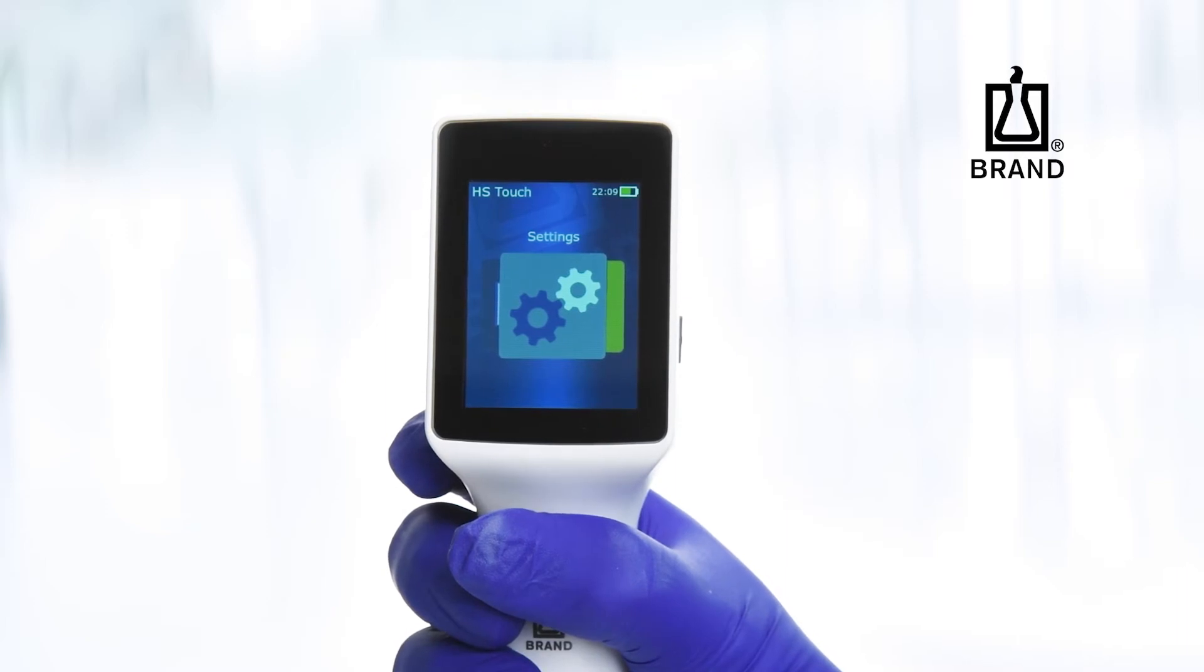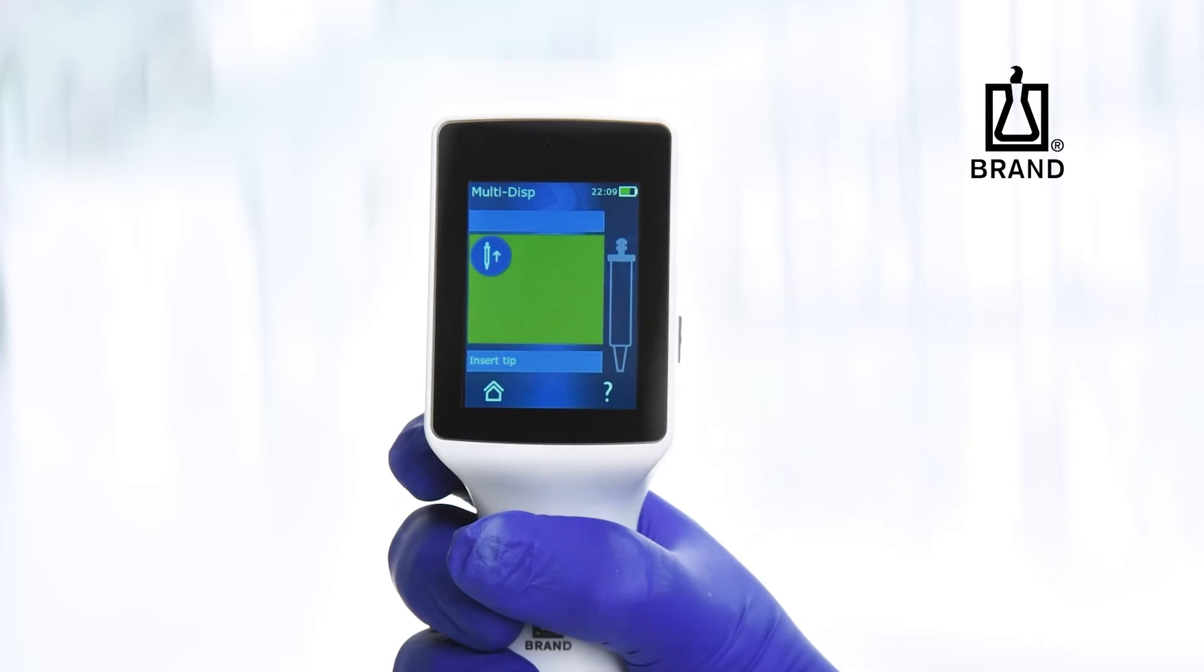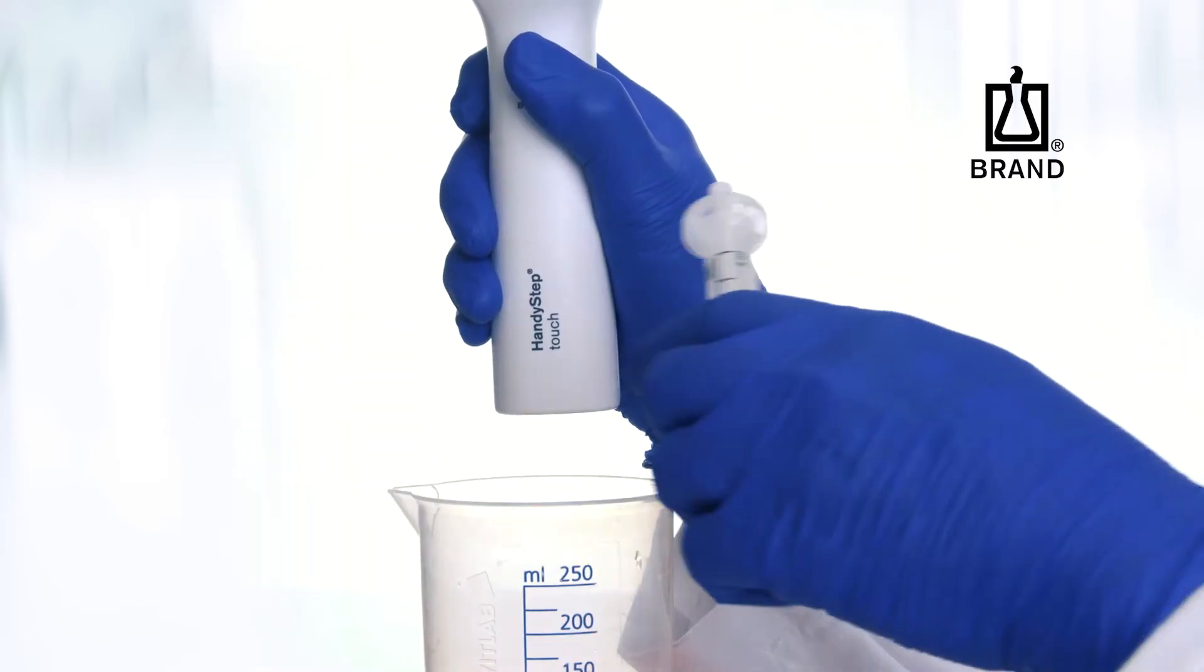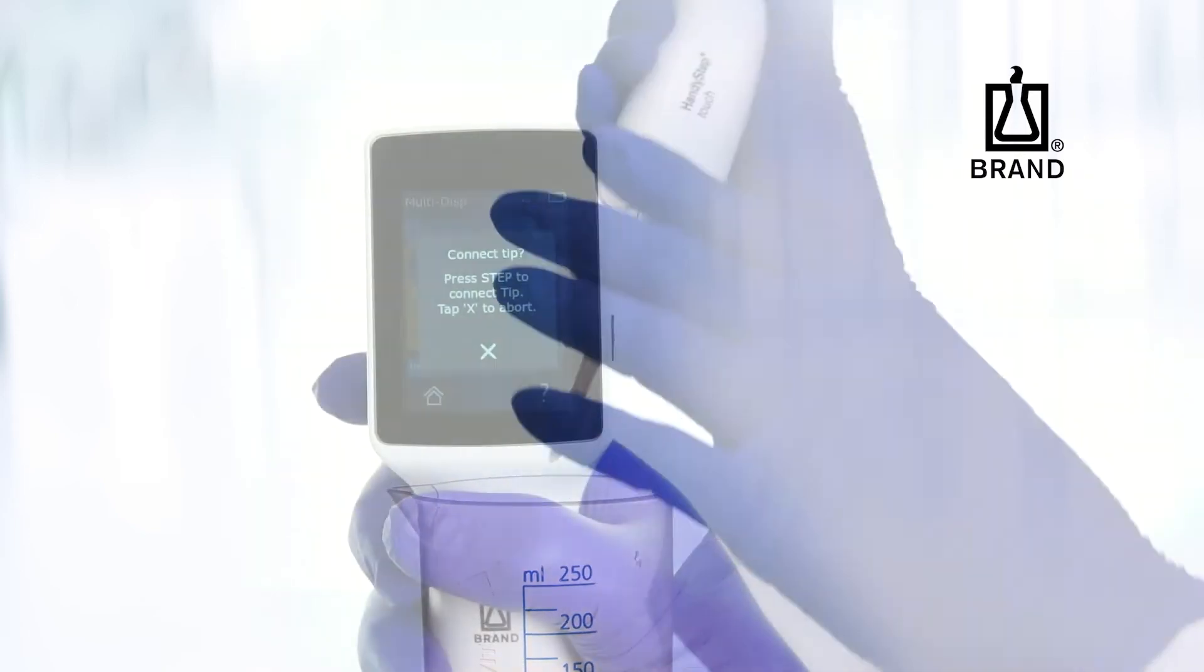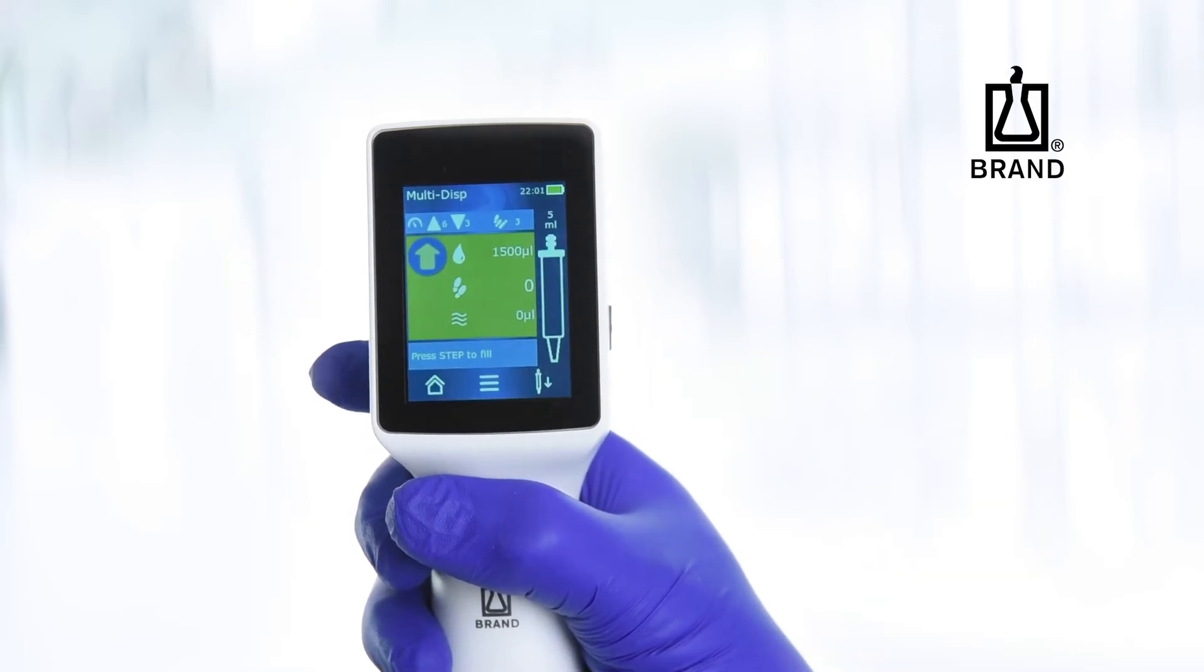Swipe left or right until the multi-dispensing mode is displayed and tap to confirm. Insert a PD-TIP 2 and press the step key to confirm. The PD-TIP volume is automatically recognized.